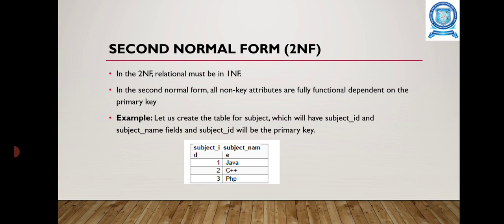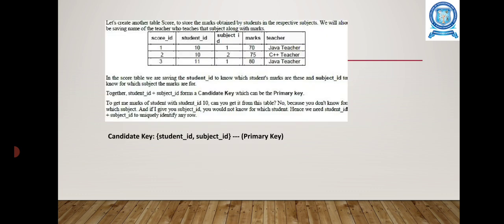Next is the 2nd Normal Form. In the 2nd Normal Form, the relation must be in 1st Normal Form and additionally all non-key attributes must be functionally dependent on the primary key. For example, consider a subject table with subject ID and subject name, where subject ID is the primary key. We also create a score table containing score ID, student ID, subject ID, marks and teacher.